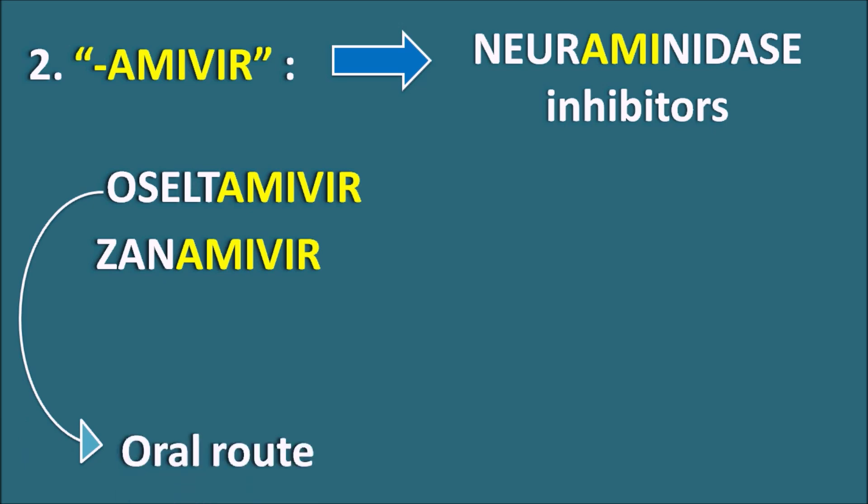Oseltamivir is given by the oral route, while zanamivir is given by the inhalation route. You can easily remember oseltamivir: 'O' for the oral route.